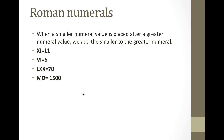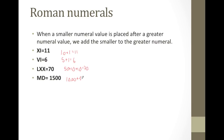When a smaller numeral value is placed after a greater numeral value, we add the smaller to the greater number — it's just the opposite. So xi is 10 plus 1 equals 11. vi is 5 plus 1 equals 6. Lxx is 50 plus 10 plus 10, and that equals 70. MD is — do you remember what m is? It's 1,000. So 1,000 plus 500 equals 1,500.